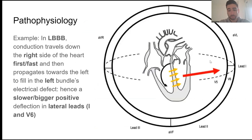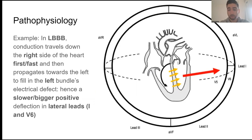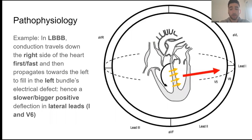In a left bundle branch block example, the electricity travels on the right side of the heart fastest and then goes slowly towards the left side. Going slowly towards the left means that leads one and V6, which are on the left side of this axis, are going to see a slow, big upward positive deflection at the end of the QRS complex.